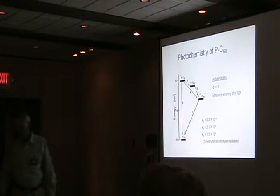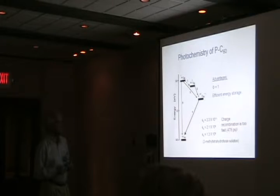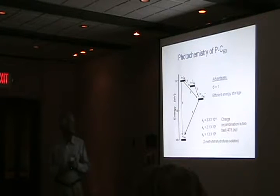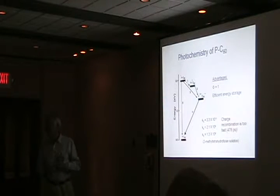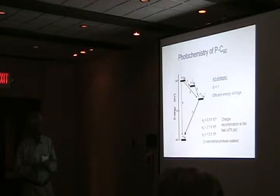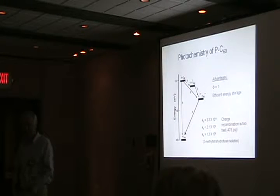It has a failing for most purposes: the charge recombination is pretty fast. In about 500 picoseconds you don't have a lot of time to figure out how to get the electron out of here over to something useful like an electrode and get the hole to go the other direction. Instead you get recombination, and you've made a system that converts light efficiently into heat — and that's not hard to do.